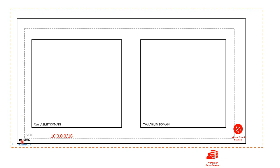We're going to build this VCN, which is the virtual cloud network, and we are going to use two of the availability domains. This is your customer data center. Before we get started we need to look into some of the prerequisites. As we do not have an existing data center, we won't be able to actually create the whole part of this exercise, but we'll definitely go through the steps in creating the VPN.